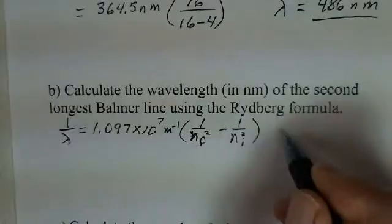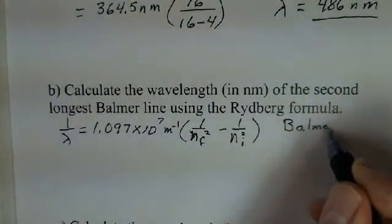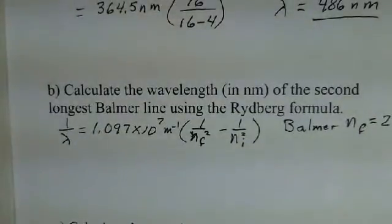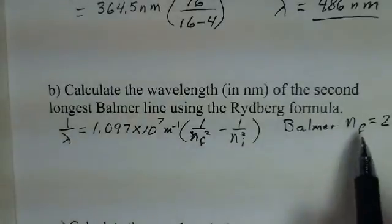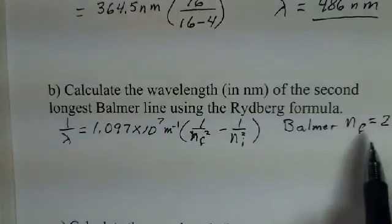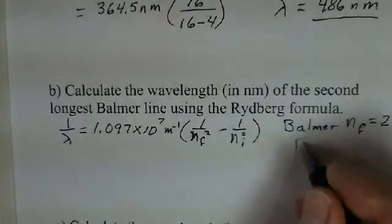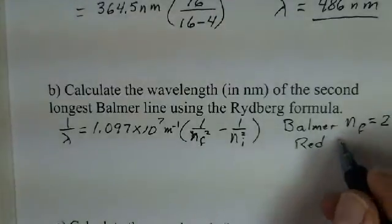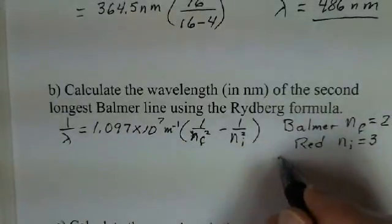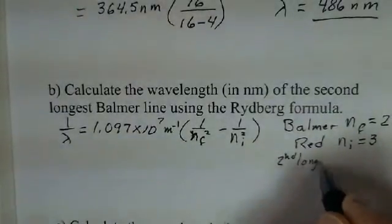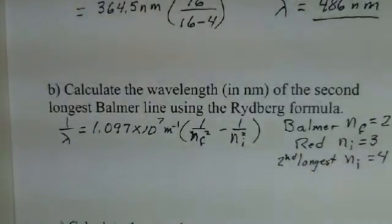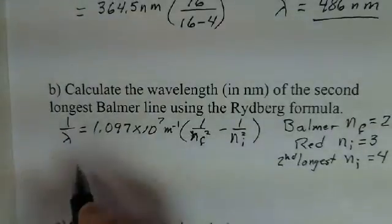It's true that for the Balmer series of lines, n final is always equal to 2. N final equals 1 for the Lyman series, n final equals 3 for the Poisson series, but here n final equals 2. The red line in hydrogen, the longest wavelength, that would be an initial n of 3. And again, the second longest, our initial state would be 4 for the n number for the electron. So let's put in those values.